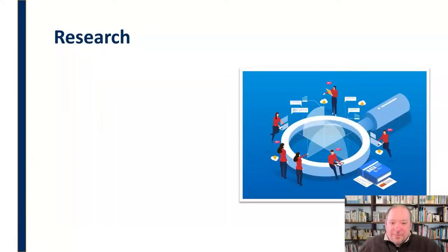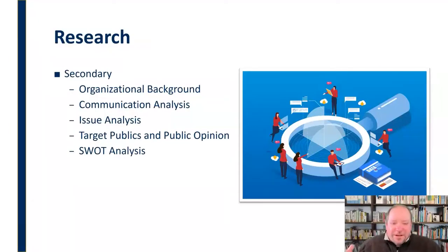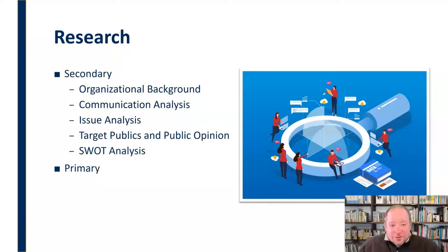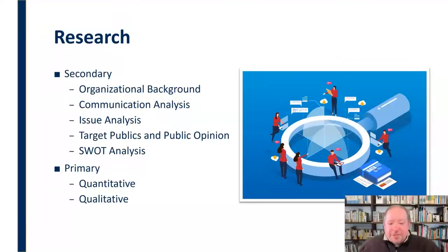We start with Research. We had a whole separate video and unit on research, so I won't spend a lot of time on this. There are two basic forms of research. First, secondary research, which involves examining the organizational background, doing a communication analysis, an issue analysis, identifying target publics and public opinion, and a SWOT analysis. Then there is primary research — going out and gathering information on your own — including quantitative research through surveys and data analysis, and qualitative research through examination and observation.